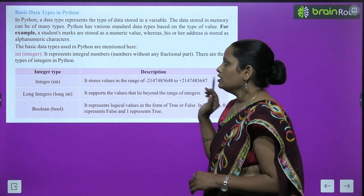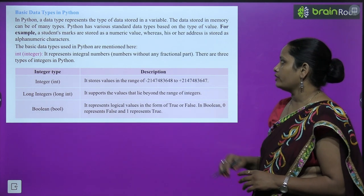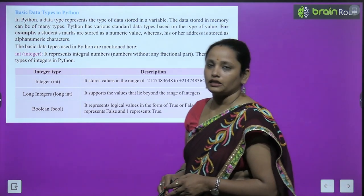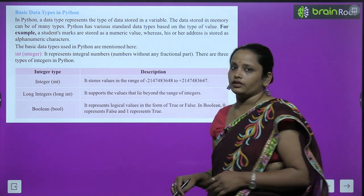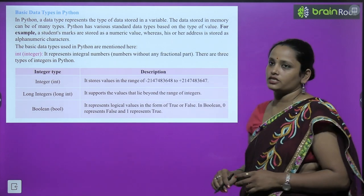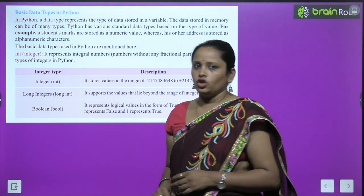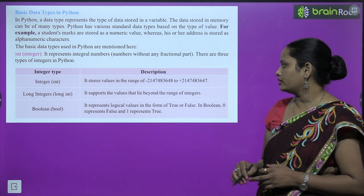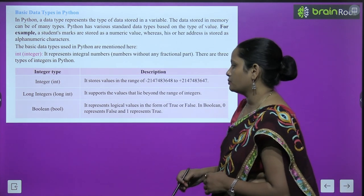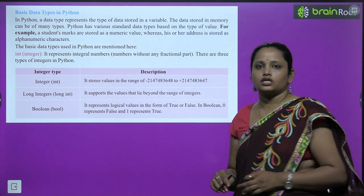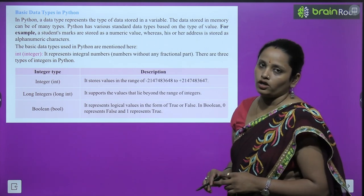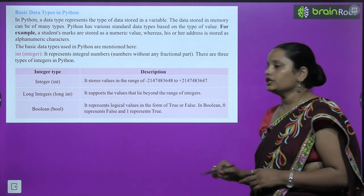The first data type is int (integer) — it represents whole numbers without any fractional part. There are three types of integers in Python: integer (stores values within a range), long integer (supports values beyond the range of integers), and boolean (represents logical values in the form of True or False). In boolean, zero represents False and one represents True.